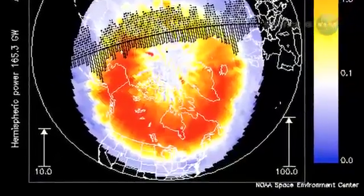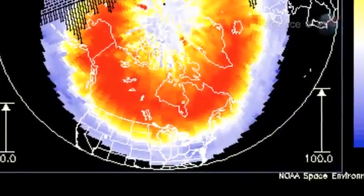The off-center impact was enough to send northern lights spilling over the Canadian border into U.S. states such as Wisconsin, Minnesota, and Michigan.